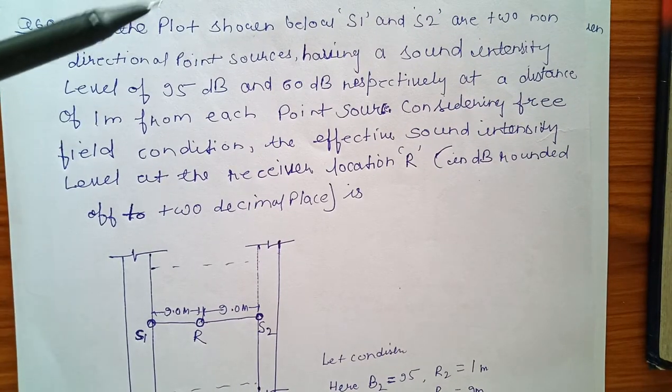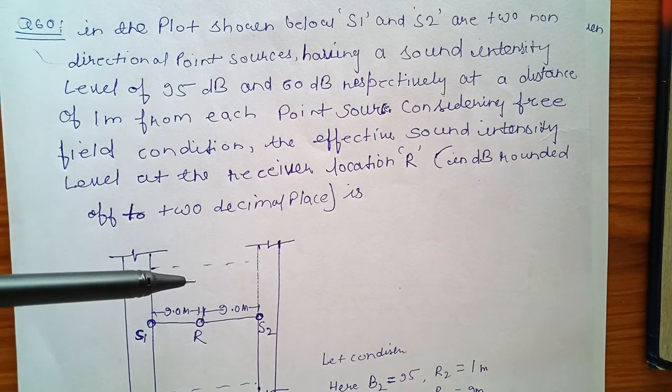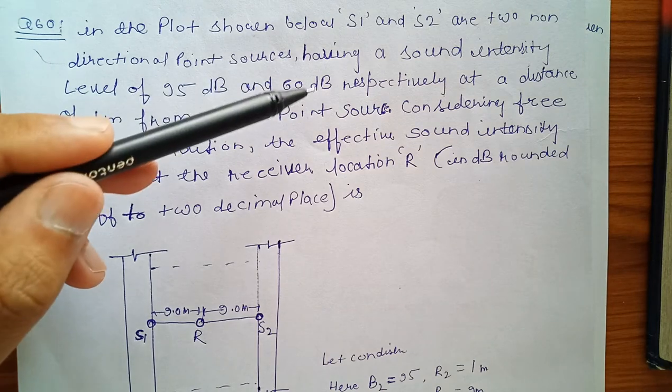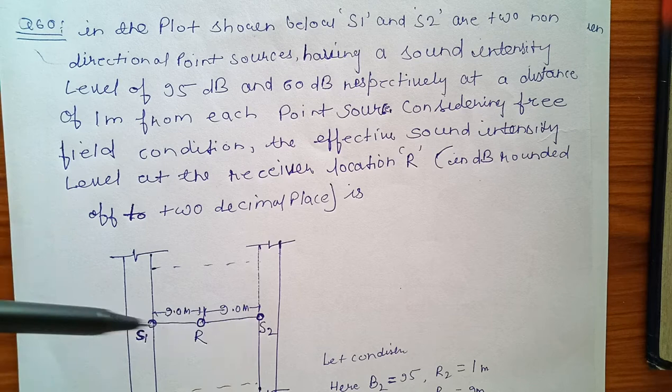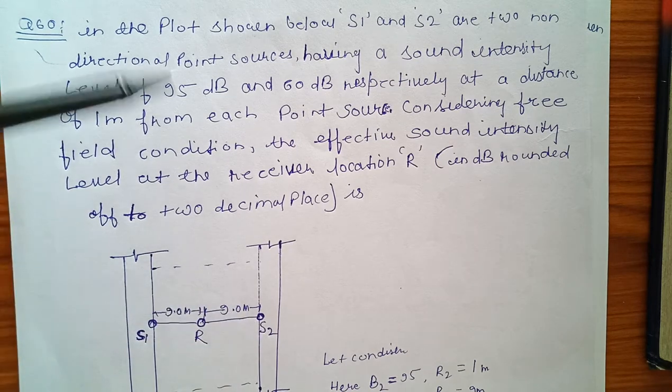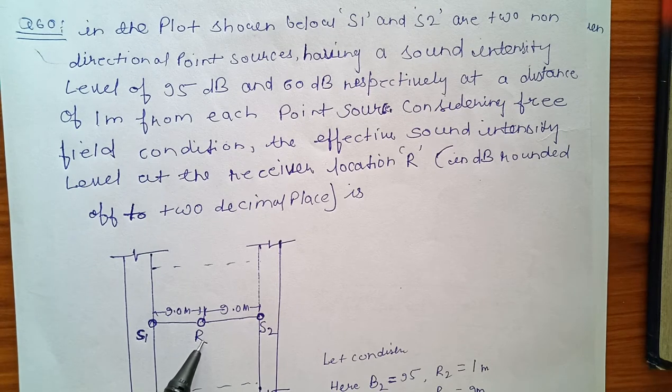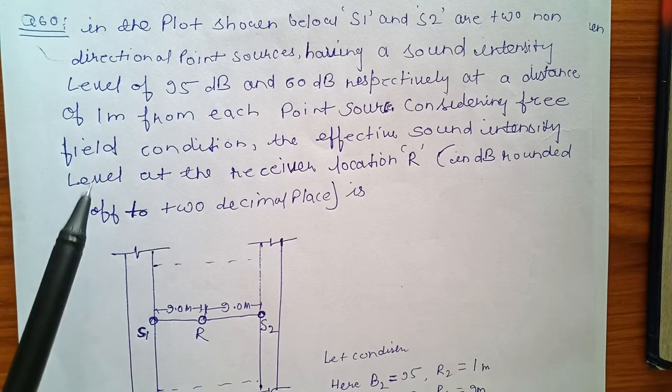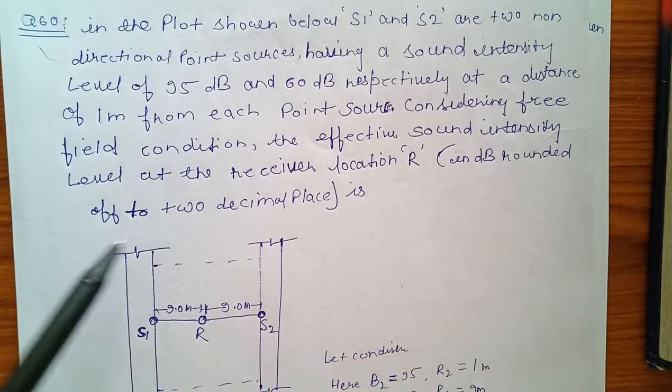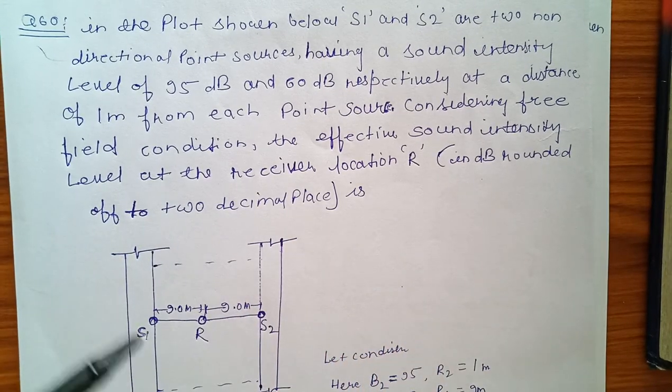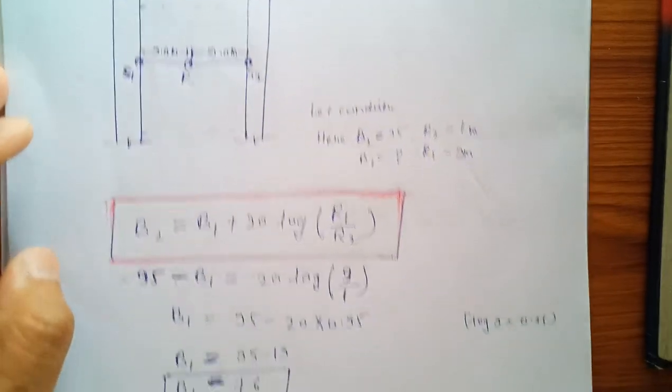Another question: In the plot shown below, S1 and S2 are two non-directional point sources. 95 decibel and 60 decibel sound intensity is given at these points, and we have to find out the sound at the receiving location. Sound intensity level at the receiver location R in decibel, rounded off to two decimal places.